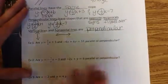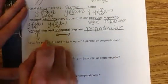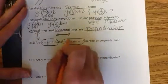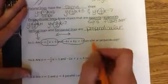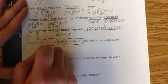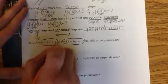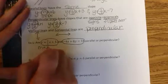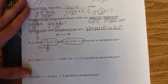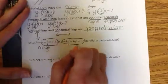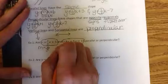Our first example: are y equals 2 thirds x plus 5 and negative 4x plus 6y equals 14 parallel or perpendicular? Looking at the first equation, y equals 2 thirds x plus 5, our slope is 2 thirds. Because y is already by itself, we can go straight to the slope being 2 thirds. The second one has y not by itself, so we have to get it that way.